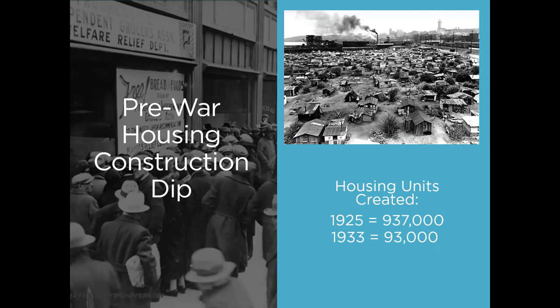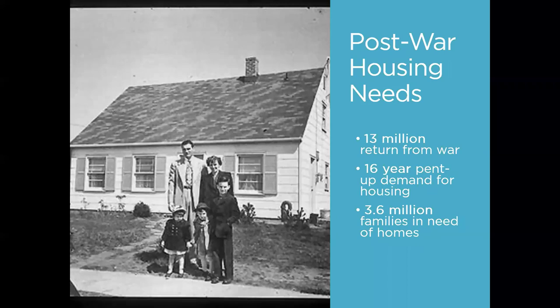In 1925, there were nearly 1 million housing units created. But by 1933, with the onset of the Great Depression, that number decreased to only 93,000 housing units. Following the Great Depression was World War II, which had the effect of creating wartime shortages of materials that wiped out the possibility of housing numbers rallying after the Depression ended.